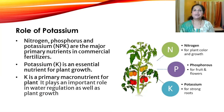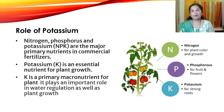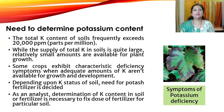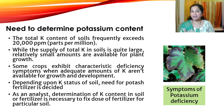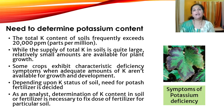Fertilizers contain nitrogen, phosphorus, and potassium as the primary nutrients. Each nutrient has its specific role in plant growth. Potassium is an essential nutrient and plays an important role in water regulation. Though soil contains potassium, relatively small amounts are available for plants. If plants do not get adequate potassium, they develop deficiency symptoms, as you can see in the figure. Depending upon the potassium status of the soil, a need for potassium fertilizer is decided. As an analyst, determination of potassium content in soil or fertilizer is necessary to fix the dose of fertilizer for a particular soil.